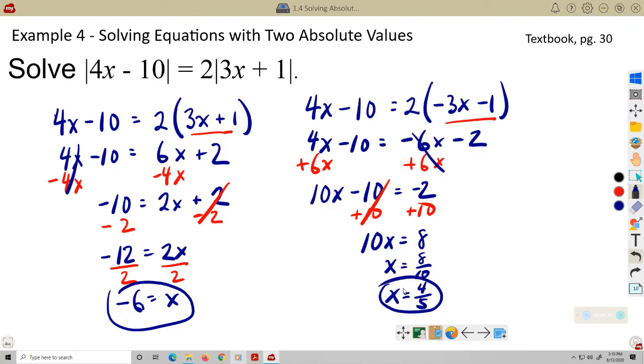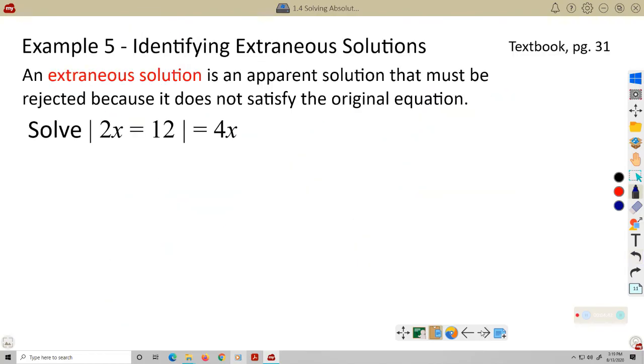Alrighty, that was fun. Let's take a look at another example here. Identifying extraneous solutions. We have a new vocabulary word we need to worry about here. Extraneous. An extraneous solution is an apparent solution that must be rejected because it does not satisfy the original equation.